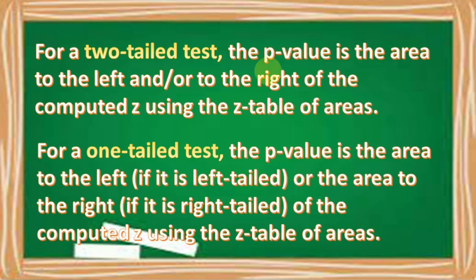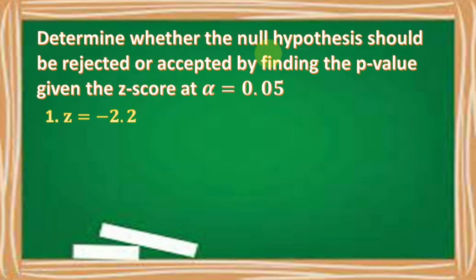Let us remember that for a two-tailed test, the p-value is the area to the left and/or to the right of the computed Z using the Z-table of areas. For a one-tailed test, the p-value is the area to the left if it is left-tailed, or the area to the right if it is right-tailed, of the computed Z using the Z-table of areas. We will now determine whether the null hypothesis should be rejected or accepted by finding the p-value given the Z-score at alpha level equal to 0.05.